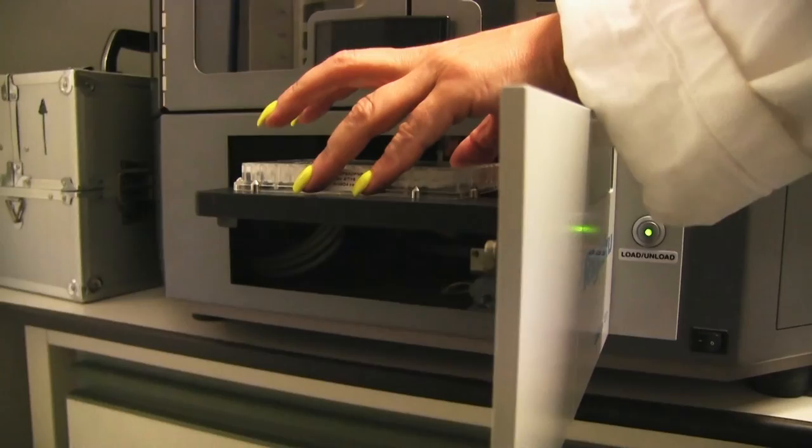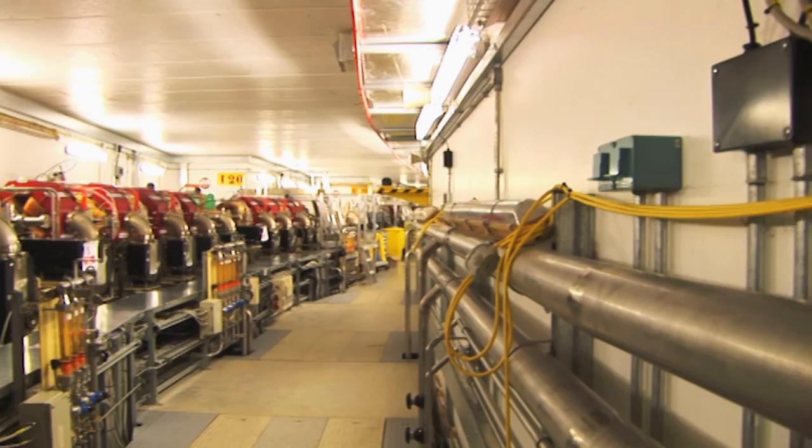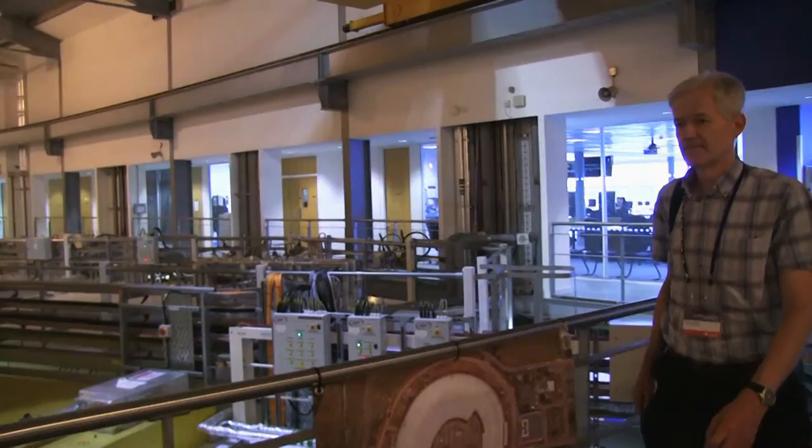Once we have good crystals, we send them to a national facility called the Diamond Light Source, near Oxford. Diamond is a particle accelerator called a synchrotron. It has a ring half a kilometre in circumference, around which electrons travel at close to light speed.